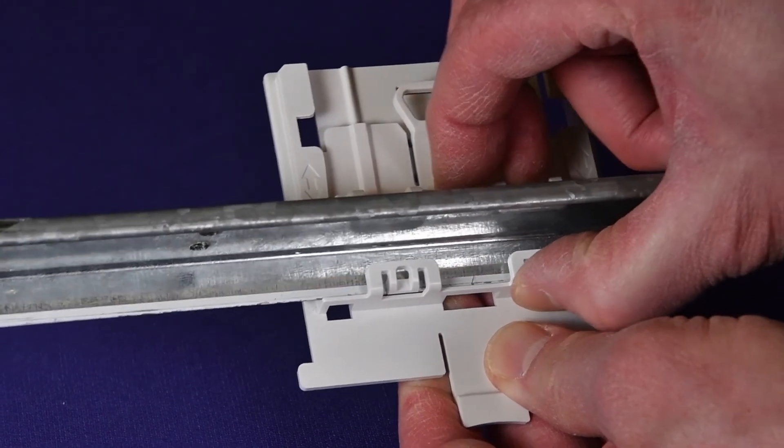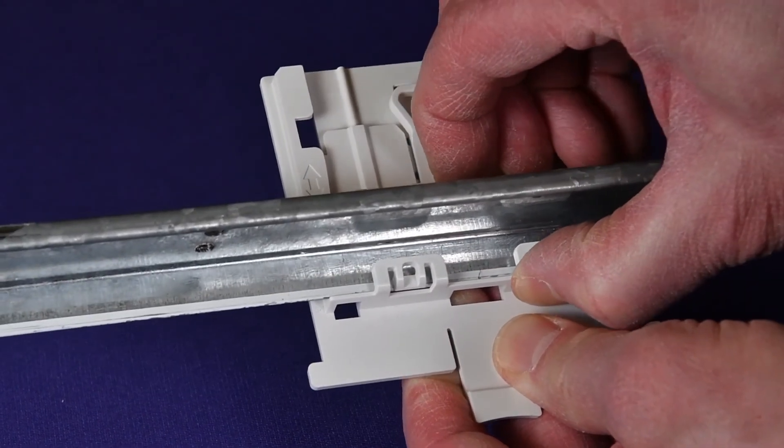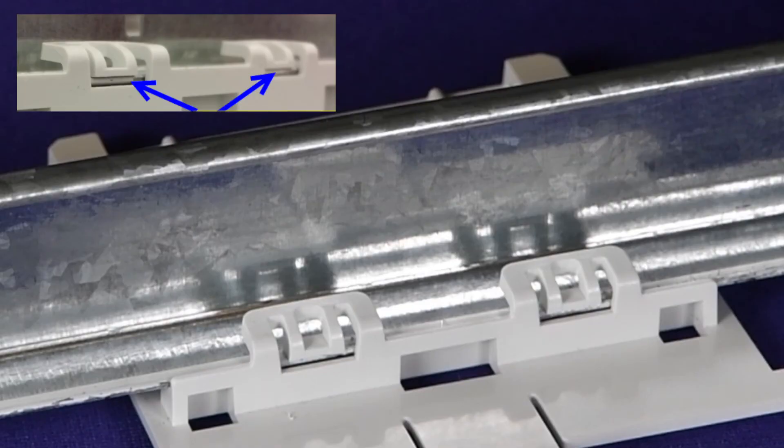Squeeze the bracket parts together until you hear the T-bar locking tab click into place. The T-bar must be visible in the bracket slots as shown.